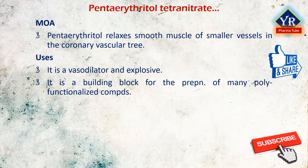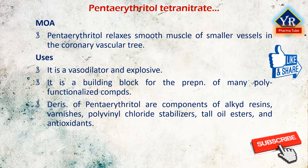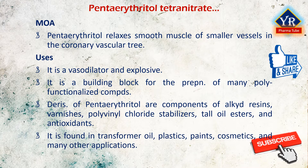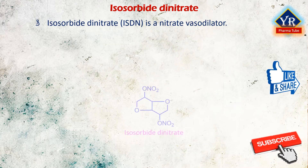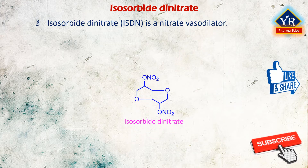Penta erythritol is a versatile building block for the preparation of many poly-functionalized compounds. Derivatives of penta erythritol are components of alkyd resins, varnishes, polyvinyl chloride stabilizers, tall oil esters, and antioxidants — for example, Anox 20. It can be found in transformer oil, plastics, paints, cosmetics, and many other applications. It is given as tablets.